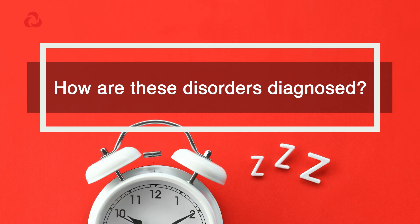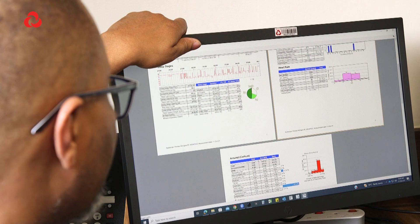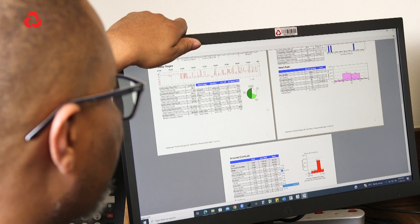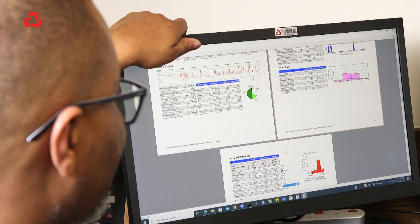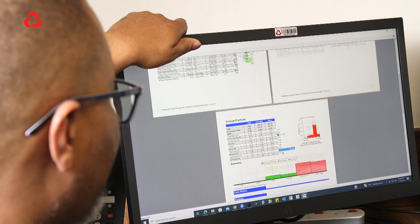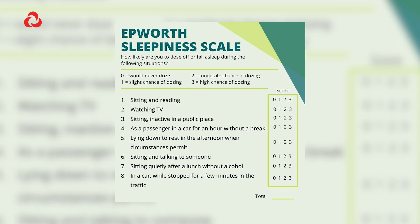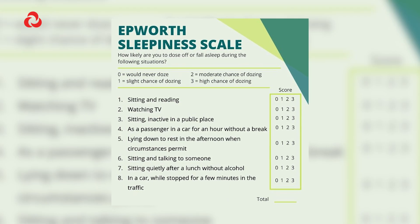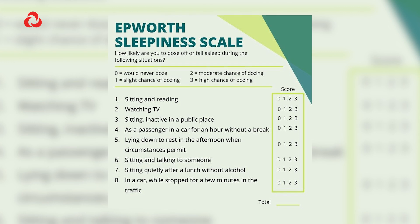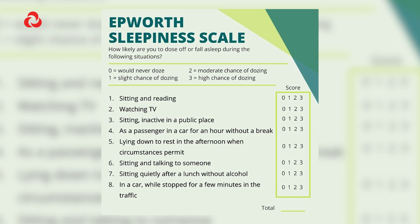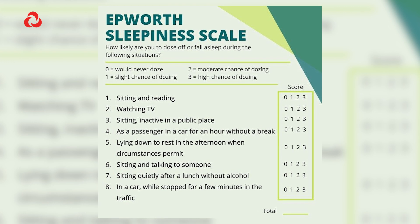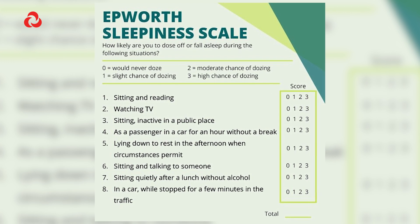We approach diagnosis by taking a history and examining the patients for all the risk factors I've mentioned. Then we have a scoring questionnaire — an example is the Epworth sleepiness score — that informs us about the likelihood that a patient has sleep apnea.